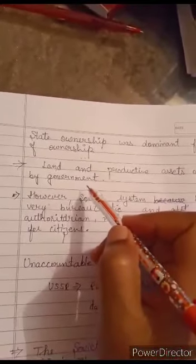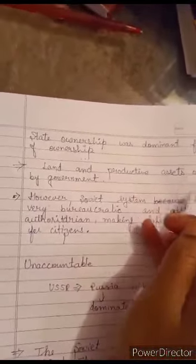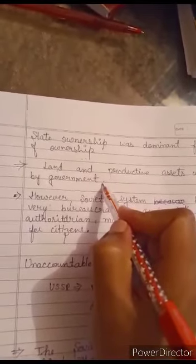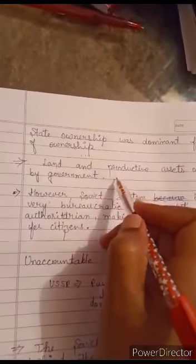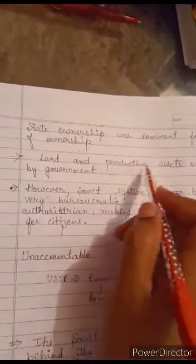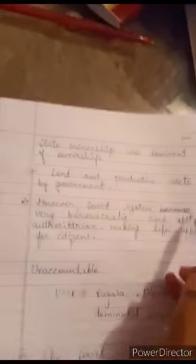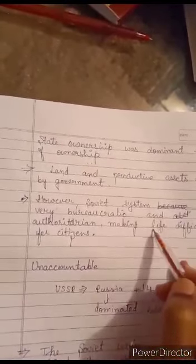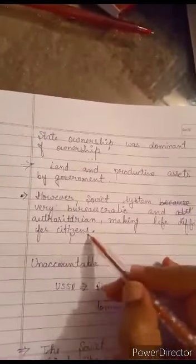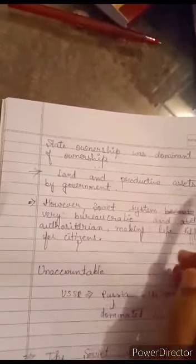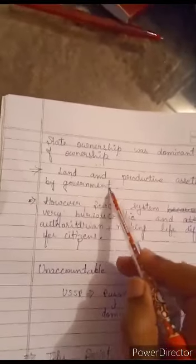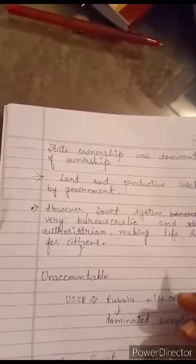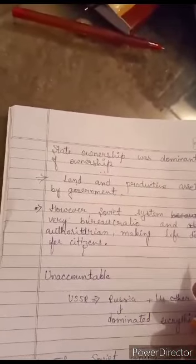And land and productive assets owned by the government. I already told you previously land and productive assets were owned by government. Nobody could take personal benefit from any kind of profit and land and productive sources. Our Soviet system became very bureaucratic and authoritarian making life difficult for citizens. One thing was this that land and productive assets were owned by government. Because for example in India you can buy anything. You can enjoy privileges if you do hard work.